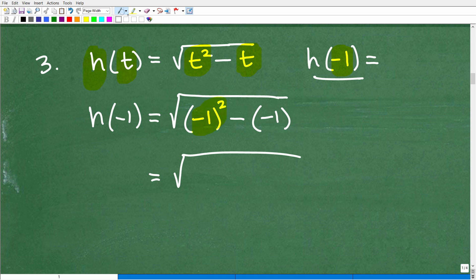So negative 1 squared, what is that? That is a positive 1. Now we have to ask ourselves, what is a negative of a negative or the opposite of a negative, any way you want to look at that, that's going to be a positive 1. So again, if you don't use these parentheses, a lot of students get in trouble, especially with negative signs. Here we have the square root of 1 plus 1, which of course is just the square root of 2. So our final answer is h of negative 1 is equal to the square root of 2. So we evaluated the h of t function for negative 1, and the answer is the square root of 2.